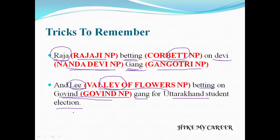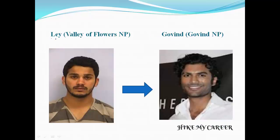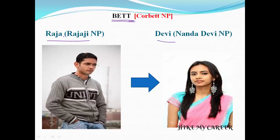So the story is: Raja betting on Devi gang, and Lee betting on Govind gang for Uttarakhand student election. Betting is the main word for the state. Raja means Rajaji National Park, betting means Corbett National Park, Devi means Nanda Devi National Park.